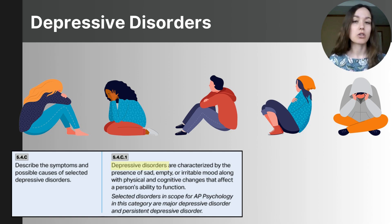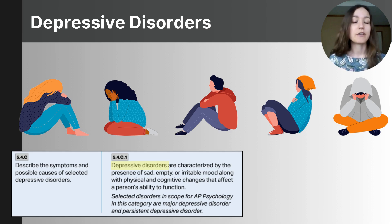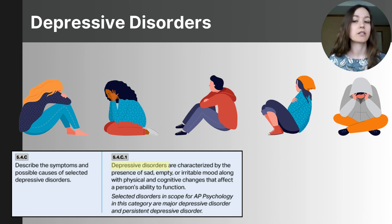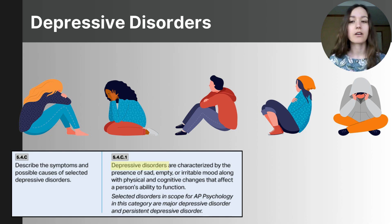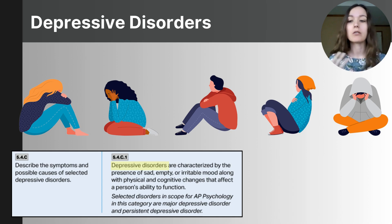Depressive disorders affect about 7% of the U.S. population annually, with higher rates seen among women and rising prevalence among adolescents. Depressive disorders arise from a combination of biological, psychological, and social factors. Those with a family history of depression are at increased risk, and depression may also result from an imbalance in neurotransmitters like serotonin or changes in hormone levels. Stress, trauma, childhood adversity, chronic stress, negative thinking patterns, and low self-esteem can also contribute. These disorders are treatable through therapy, medication, and lifestyle changes.